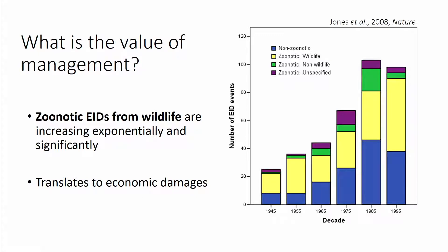So what's the value of investing in a framework for managing these risks from an interdisciplinary perspective? The goal would be to change the exponential trend that we're seeing in emerging infectious disease events. The value of investing in management, or thinking about managing these problems early on or before they even occur, would be changing that exponential trend.